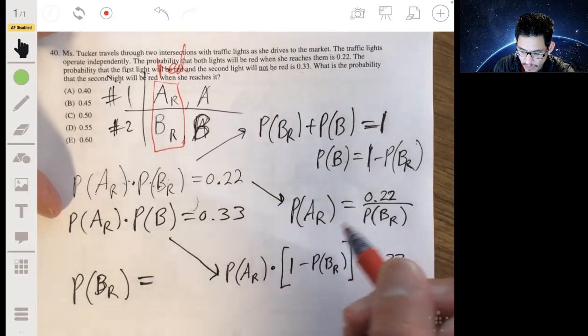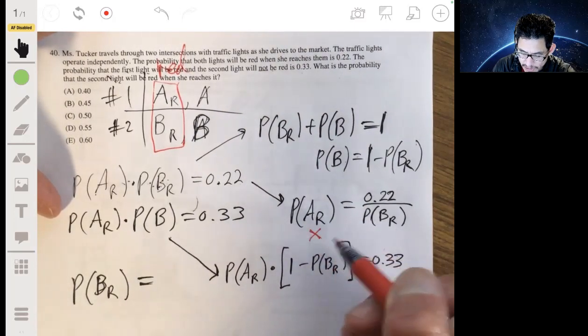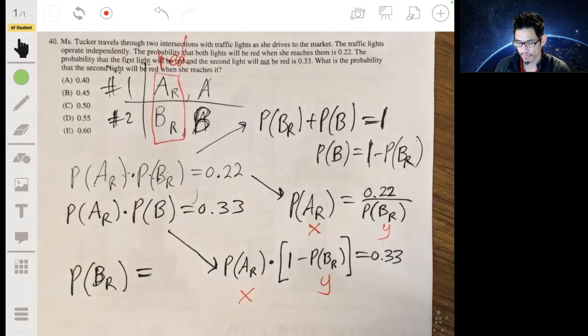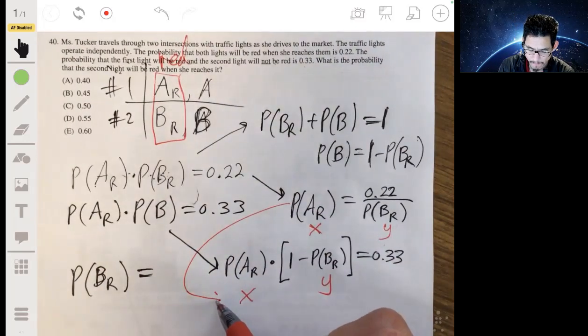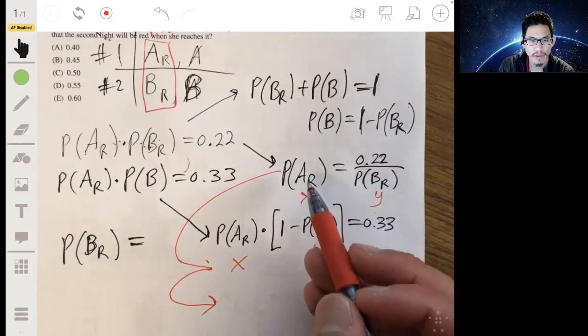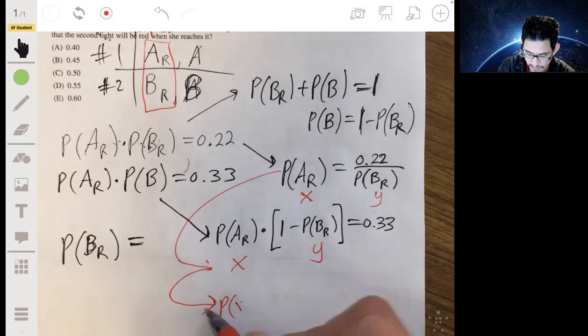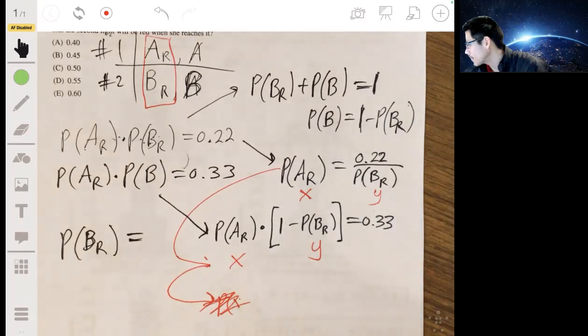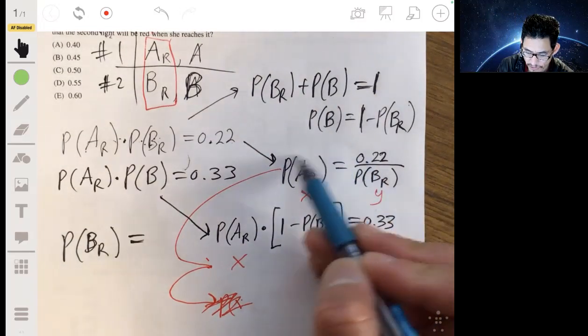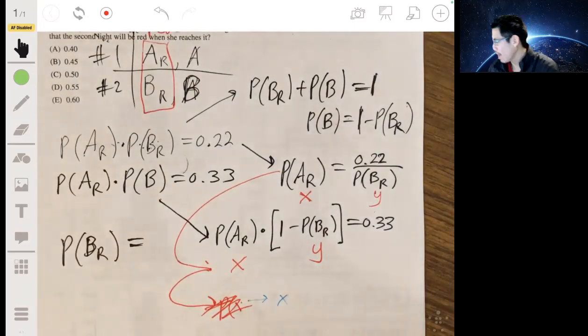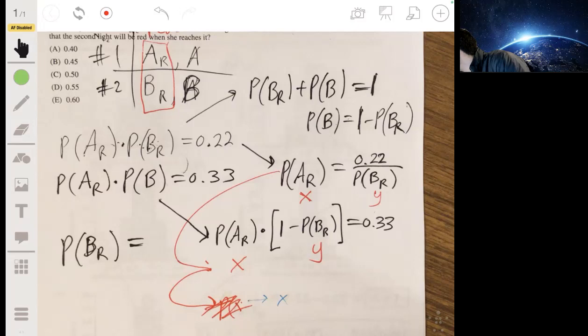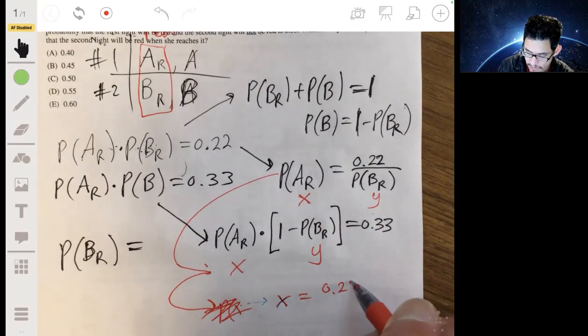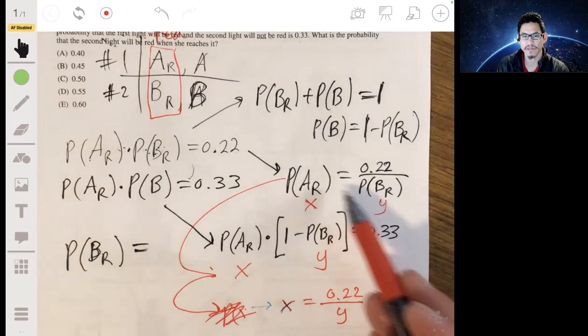So the probability of AR is just 0.22 divided by the probability of BR. Now, we just have these equations that we're working with, the first light being red, the second light being red. And just to make this easier to symbolize, we're just going to replace AR with X, and then BR will be Y. So in other words, in other words, we can go from there. So replacing this whole thing with X, we can say, my pen, I can't get a pen going.